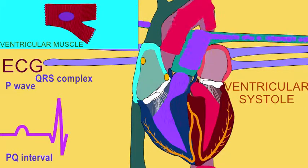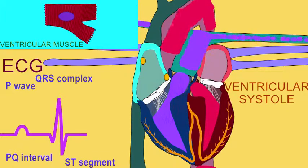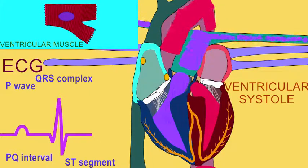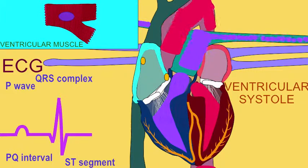The semilunar valves open at the very end of the QRS complex and ventricular ejection can begin. During the ST segment going into the T wave, the ventricles are in systole, the semilunar valves are open, and blood is being ejected from the ventricles. The volume of blood in the ventricles is then dropping from the full point of the ventricles at the end of their diastole.